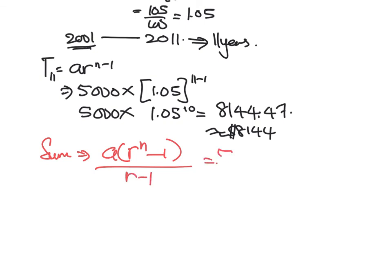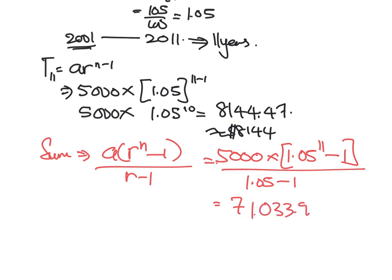So A is the initial investment. So 5000 multiplied by R, which is 1.05 to the power of 11 minus 1 and divide this by 1.05 minus 1. So you have $71,033.94, which I can round to $71,033.